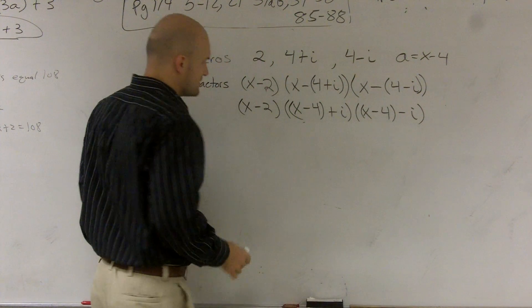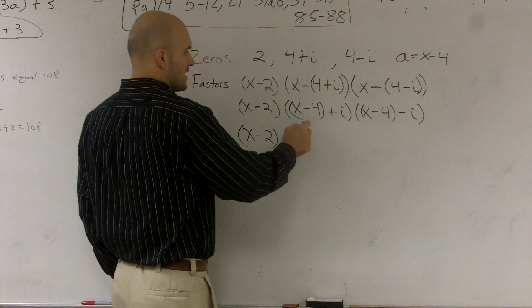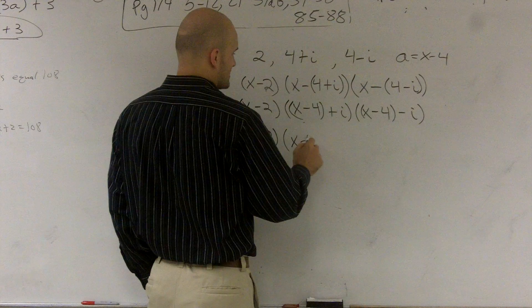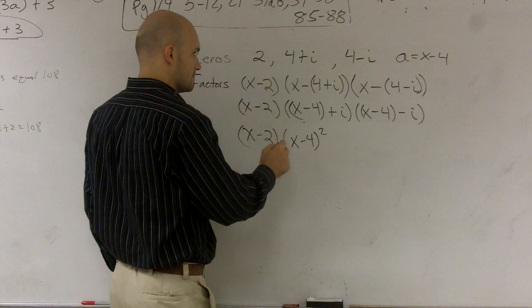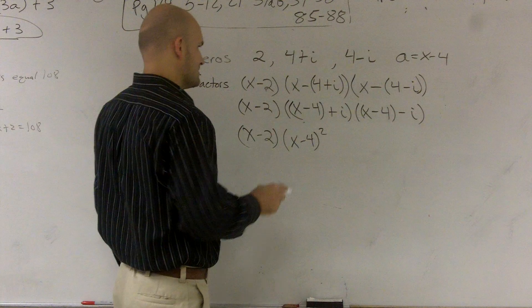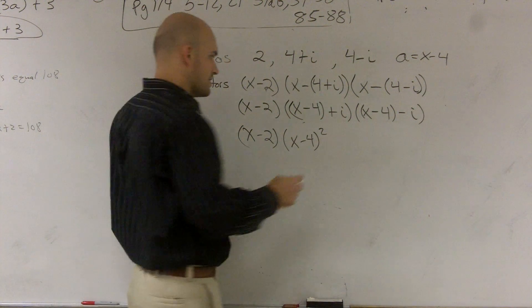So what happens is, let's multiply these. So (x-2). So I have (x-4) times (x-4) is going to be (x-4)². And then this is going to give me i times -i, which is going to give me -i².